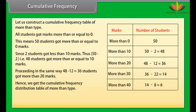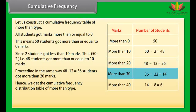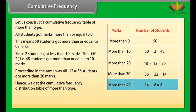The cumulative frequency distribution table of more than type: marks more than 0 — 50 students; marks more than 10 — 50 minus 2 equals 48; marks more than 20 — 48 minus 12 equals 36; marks more than 30 — 36 minus 22 equals 14; marks more than 40 — 14 minus 8 equals 6. This table is known as the cumulative frequency table of more than type.